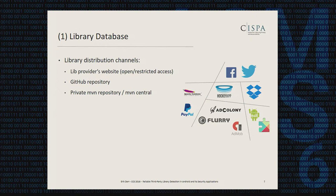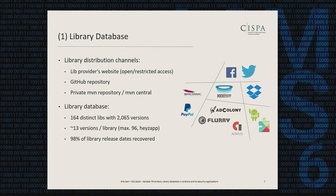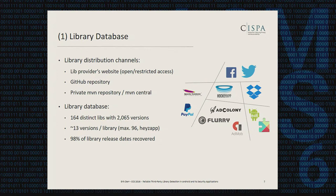We used our search engine of choice to search for popular and recommended libraries for certain functionality. In the end, we built a database of about 164 distinct libraries with a bit more than 2,000 versions, averaging around a dozen versions per library, with exceptional cases having almost 100 versions. By analyzing release logs, changelogs, and using the Maven Central API to retrieve metadata, we were able to recover the release dates of those libraries in almost all cases.